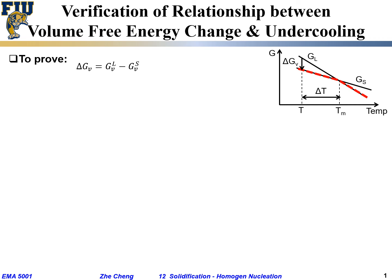Let's continue and prove what we said: the so-called volume free energy term is a function of under cooling. ΔGv is defined as the volume free energy change — the liquid term minus the solid term. And we want to prove that it equals Lv times ΔT over Tm.